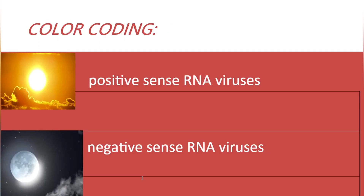Now for color coding that will be used in upcoming videos in this series: RNA viruses will be represented by a specific background color. Positive sense RNA viruses will be represented by the sun, and negative sense RNA viruses will be represented by the moon — to aid visual learning.